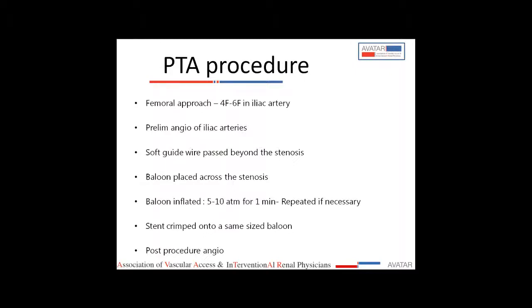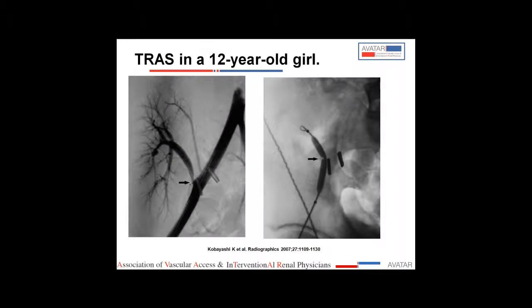Percutaneous transluminal angioplasty is the most preferred option, with a high clinical success rate of 85–90% in terms of serum creatinine and 60–80% in terms of blood pressure control. There is a chance of restenosis, so stenting is done in cases of recurrent stenosis, residual stenosis more than 30%, or a flow-limiting dissection.